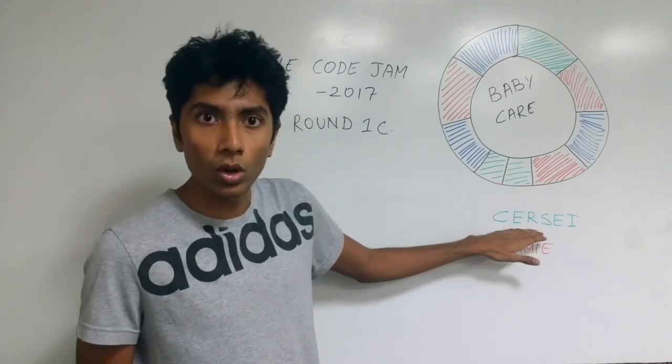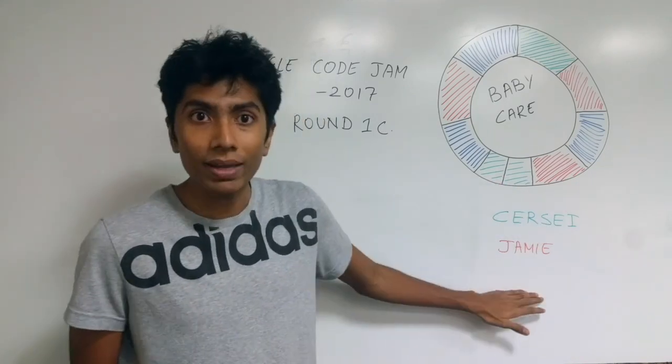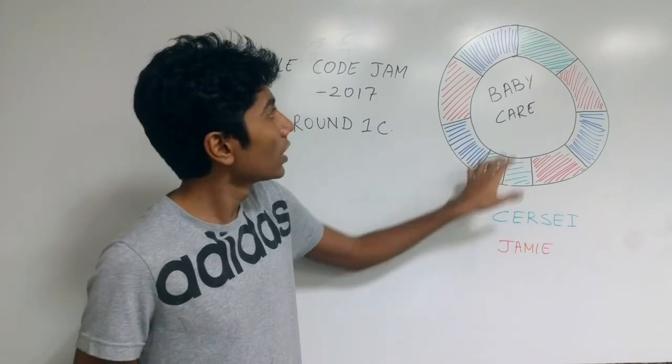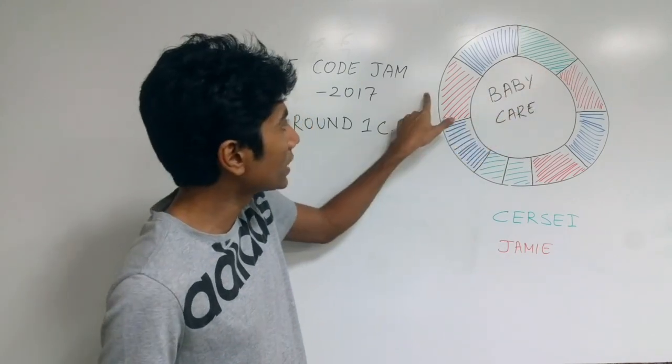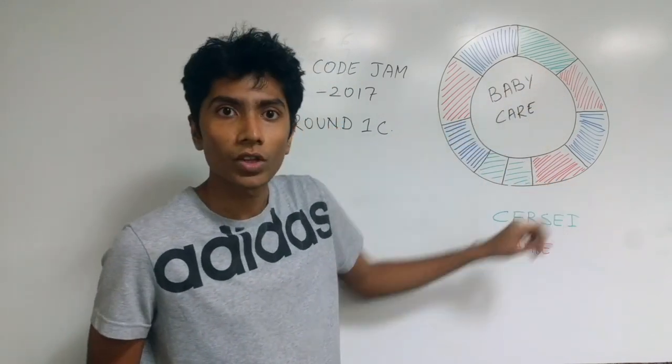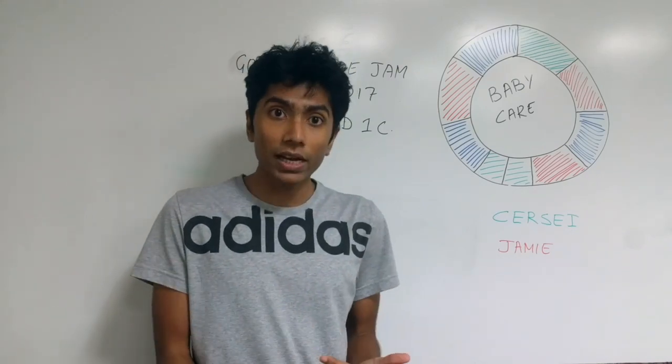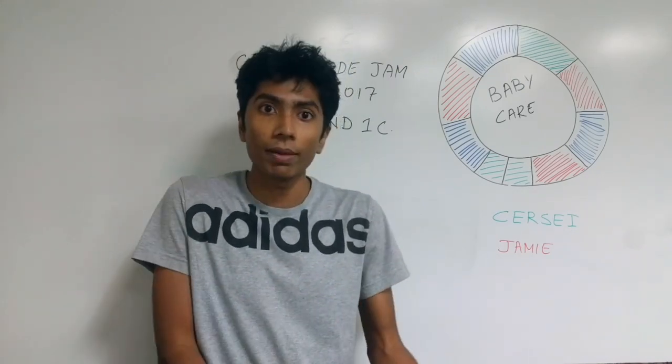Whenever one person goes out to work, Cersei, the other person, Jamie, has to take care of the baby that time. So at this point Jamie is taking care of the baby at these two segments. And here also. And Cersei takes care of the baby at these segments. Our job is to reduce the number of transitions that you have, the transitions of the baby as much as possible.